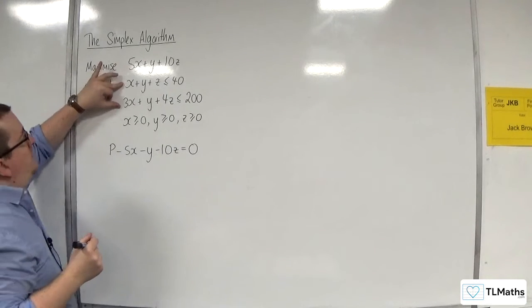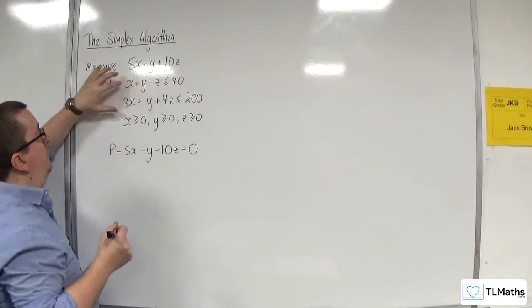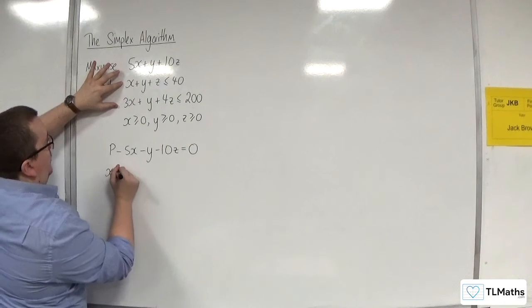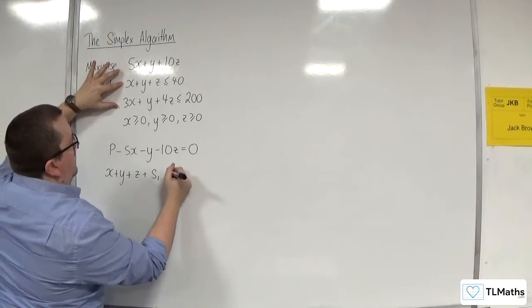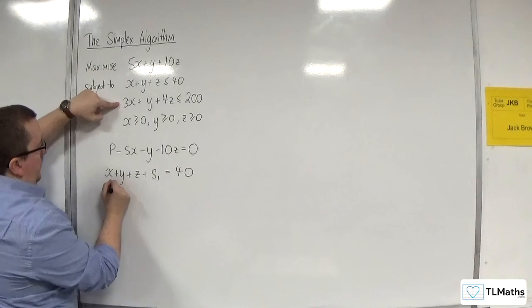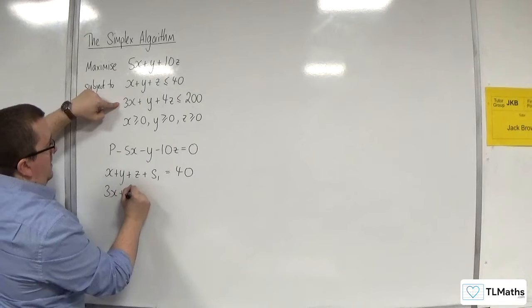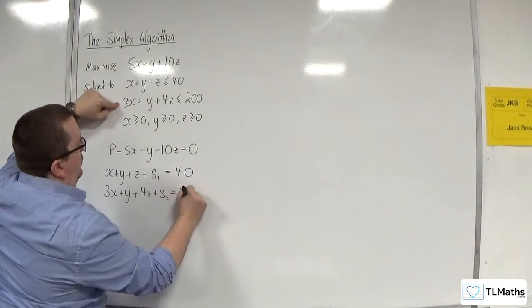Now, for these constraints here, because they are less than or equal to, I'm going to have to add on a slack variable. So we're going to have x plus y plus z plus s1 is going to be equal to 40. So that turns the inequality into an equality.